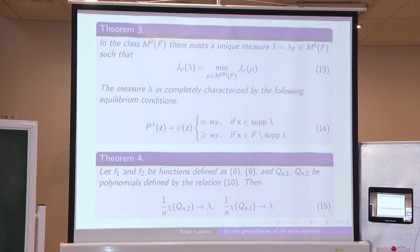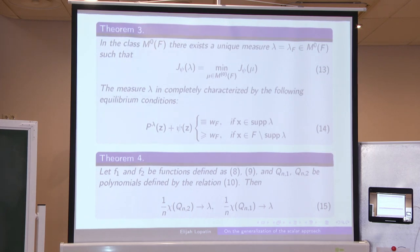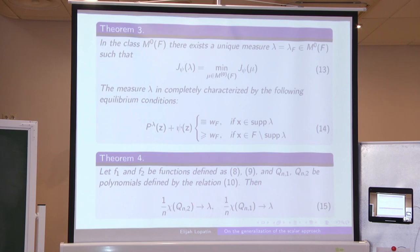If we denote by M_0(F) the class of probability measures supported on the copy of F on the zero sheet of the surface S, we can obtain the solution of the following minimization problem, and it will be the weak-star limit of the counting measures of polynomials Q_N^2 and Q_N^1.